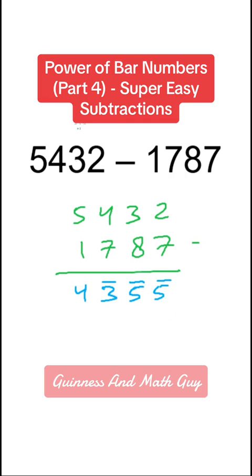And this is same as 4000 minus 355. So what we do is we decrease this 4 by 1 to make it 3 and then we apply our formula all from 9 and the last from 10 on this 355. So 3 from 9 is 6, 5 from 9 is 4 and this 5 from 10 is 5 and that is our answer.